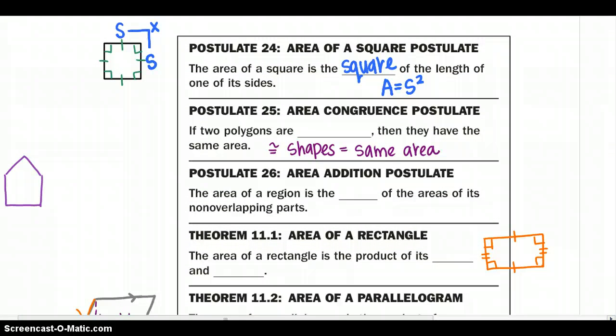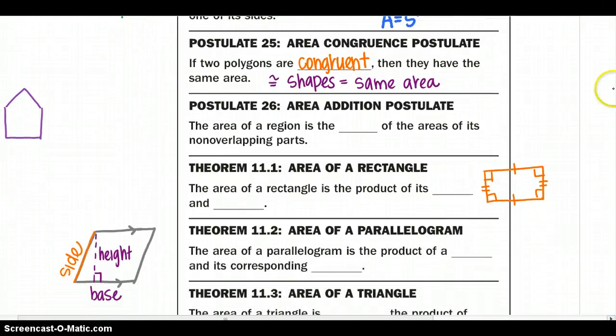The area congruence postulate says, if two polygons are congruent, then they have the same area. So congruent shapes equal congruent areas, kind of like if I wanted to tile a floor. My tiles are going to have the same area, so I will know how many tiles I'll need to cover that floor.